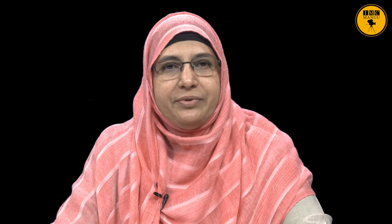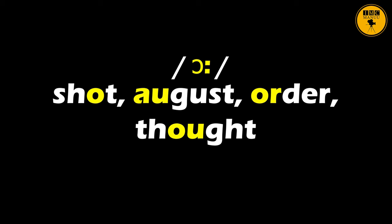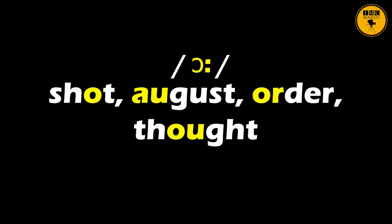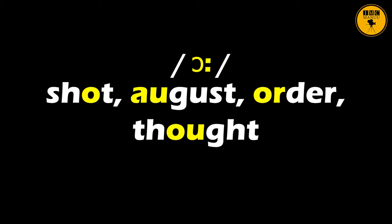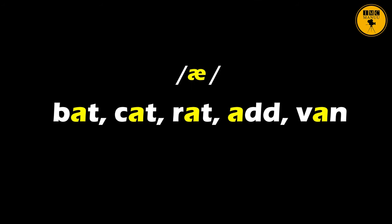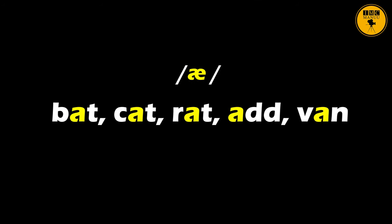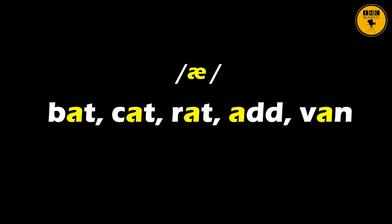We look at another example: short, August, order, thought. Please repeat to practice the vowel sound: short, August, order, thought. 'I thought an order was issued in August.' Let us look at more examples of monophthongs — on your screen are some words. Watch those words carefully and repeat after me.